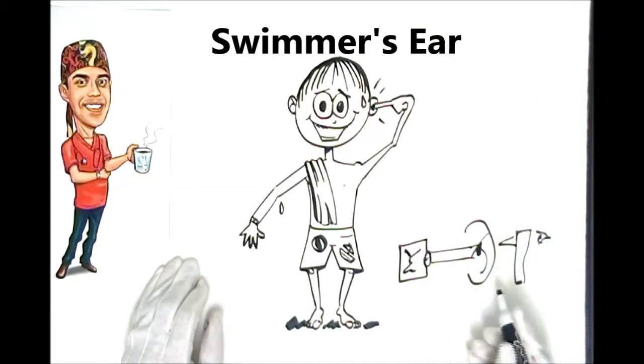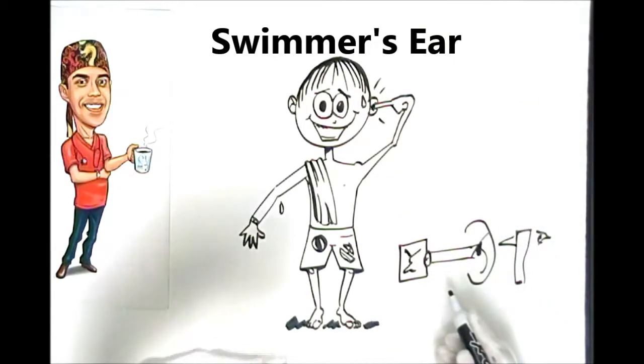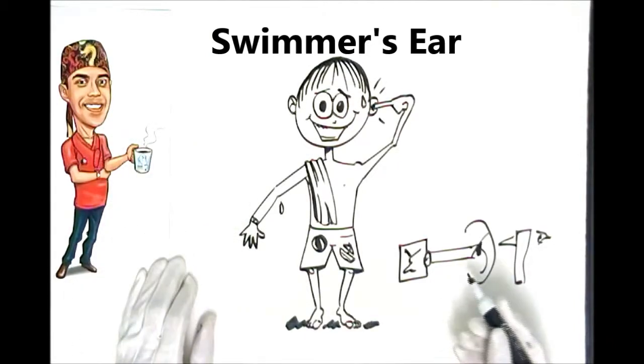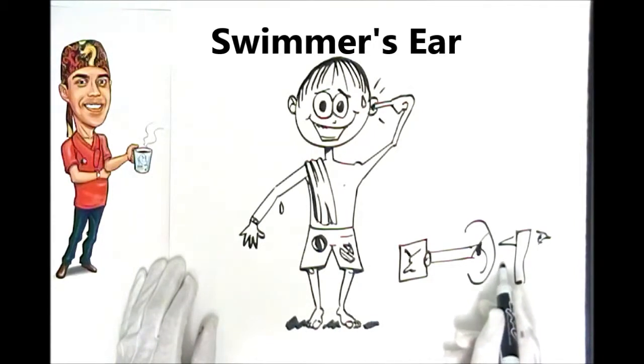So what happens in Swimmer's Ear is that people who are jumping into pools or lakes or even submerging themselves in bathtubs, water finds itself into the ear and lodges in the ear canal. And if it can't get back out sufficiently well, it becomes stagnant.